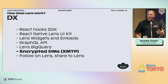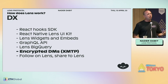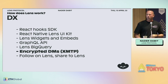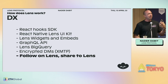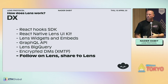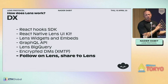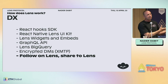We also have a standard with XMTP for DMs on Lens, so you can tap into the 100,000+ users on Lens using XMTP with just a few lines of code. XMTP is a great protocol. The integrations you might build with Lens widgets include follow on Lens, sign in with Lens, share to Lens, profile view, and publication view — useful if you want to open the door to more distribution for your app even if it's not primarily a social app.